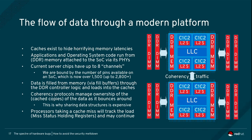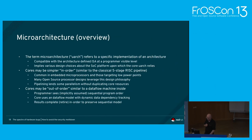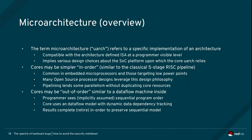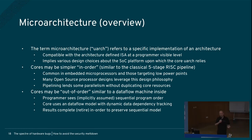A typical server has two sockets, two chips connected to each other, with lots of memory chips connected to them. As data is used, it flows between the cores through the caches. Microarchitecture refers to a specific implementation of an architecture — it's compatible with the ISA at the programmer level, but the implementation is up to the team designing the chip. At a high level, a microarchitecture might be in-order or out-of-order.